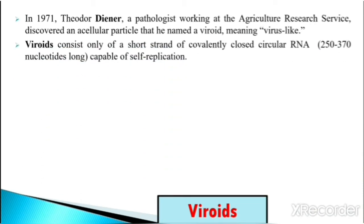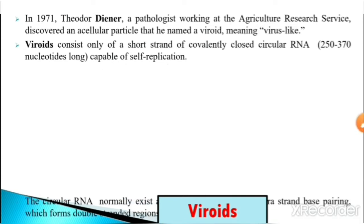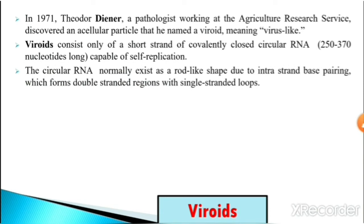Viroids consist only of a short strand of covalently closed circular RNA capable of self-replication. This closed circular RNA structure is made from covalent bonds and consists mainly of 250 to 370 nucleotides.